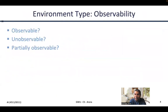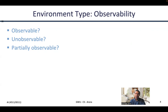The first attribute of the environment type is observability — that means is the agent able to see the environment, or partially see it, or not see it at all. For example, if it's a chess playing robot, then most likely it can see the environment and see where the pieces are. If it's a car driving agent, then maybe it cannot see the environment entirely — it can perhaps see what sits in the field of vision of the camera, but it cannot see what's behind another car.